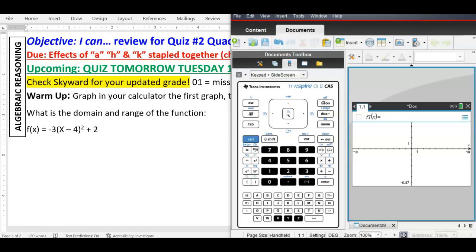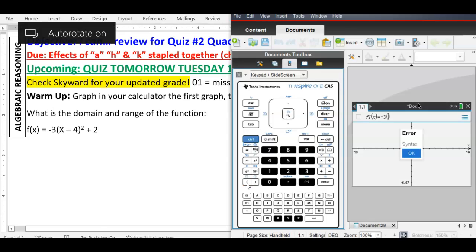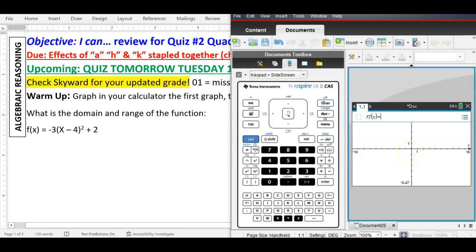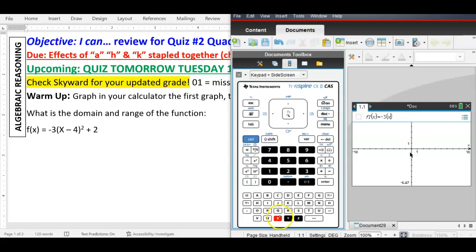Now, you should be able to type this in after the equal sign perfectly. So, negative three, and then parentheses. There we go, unfrozen. X minus four. Okay, let's try that again. Negative three, parentheses. X minus four, parentheses, squared, plus two.